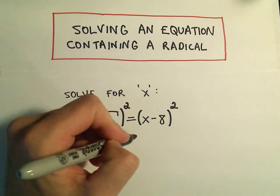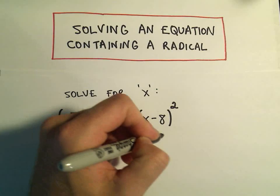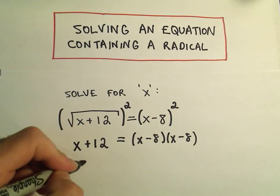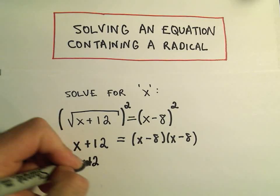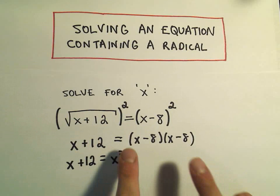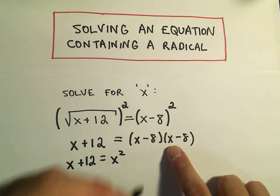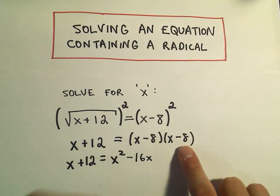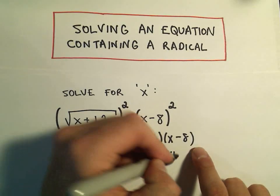On the right side, we're going to have to FOIL this out. This is x minus 8 times x minus 8. So on the left, we still have our x plus 12. On the right, we'll multiply x and x and get x squared. We'll get a negative 8x and then another negative 8x which will give us negative 16x. Negative 8 and negative 8 is positive 64.